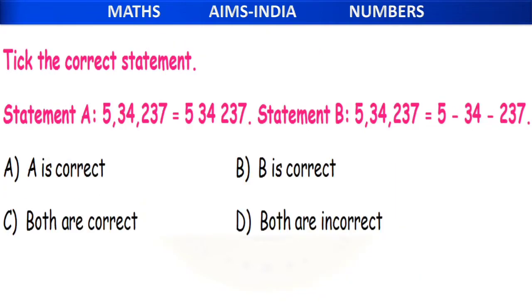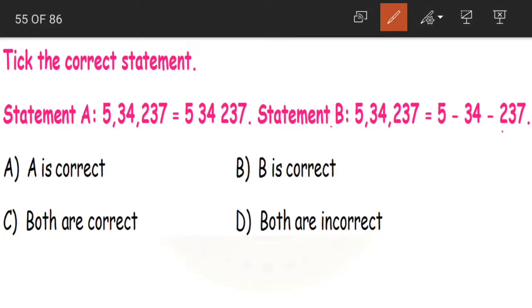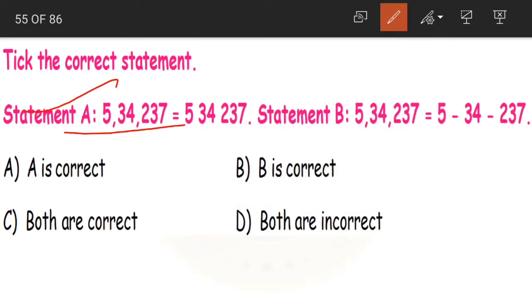Next, tick the correct statement. Statement A shows 5,34,237 written with commas. Statement B shows the same number but with hyphens instead of commas. We have learned that instead of commas, we can leave some space, but not hyphens. So only Statement A is correct, that is option A. Statement B is wrong — we can put either a full stop or a space, not a hyphen, instead of commas.